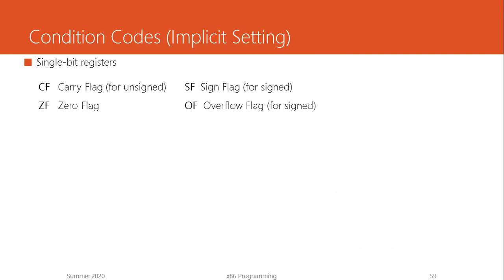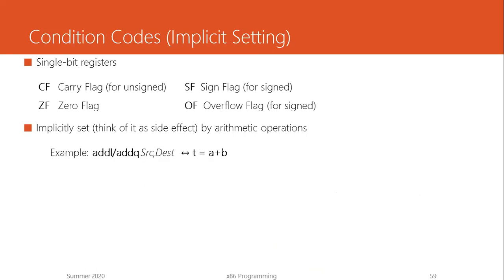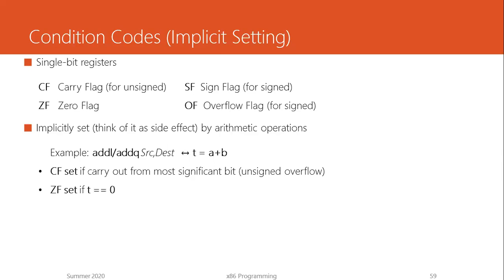Condition codes may be altered in two ways. The first is implicit setting — it just happens when you carry out some operation. For example, an addition instruction performs arithmetic but also sets condition codes based on the result. In the edge case when there is a carry out from the most significant bit — essentially an unsigned overflow — the CF (carry flag) is set. If the result equals zero, the zero flag ZF gets set to one.